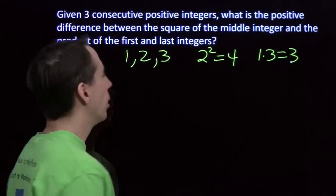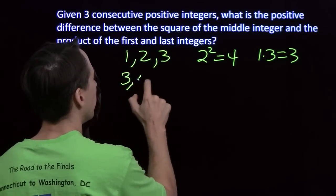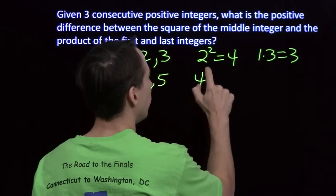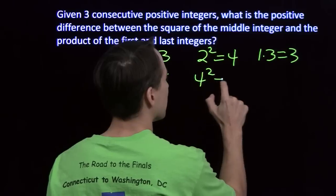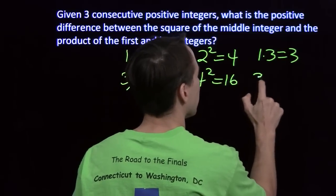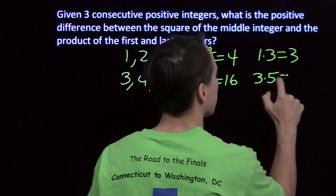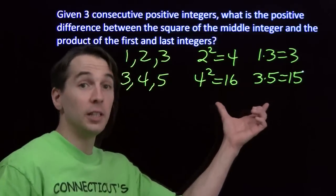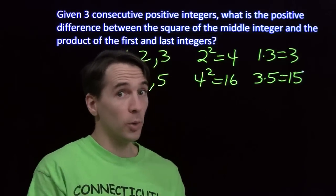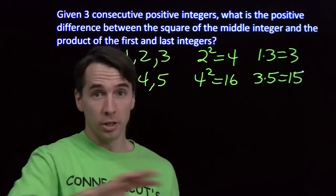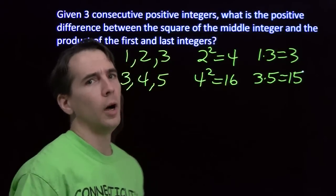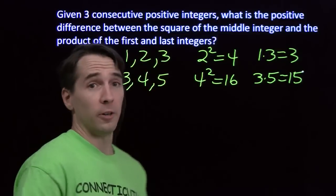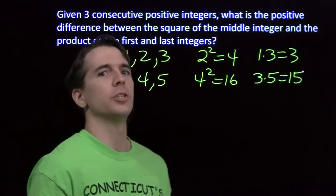These are one apart. Let's try another example: 3, 4, and 5. Square of the middle one: 4 squared is 16. Product of the first and the last: 3 times 5 is 15. These are one apart as well. Now I know what you're going to do in the contest — you're going to write 1 and move on, but not me. I don't trust it. I don't know that this is going to work for any three consecutive integers.